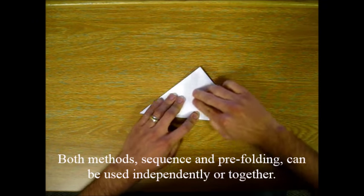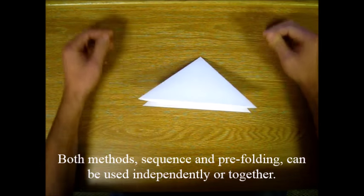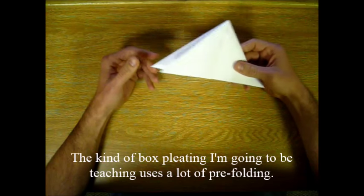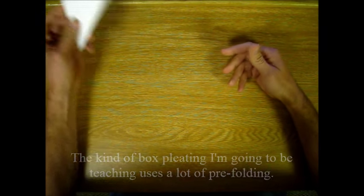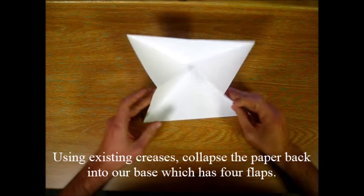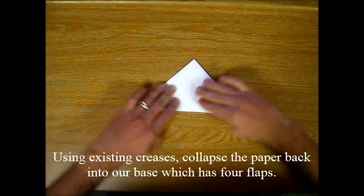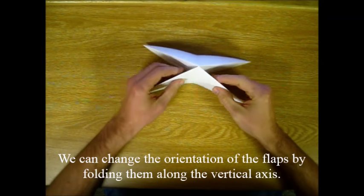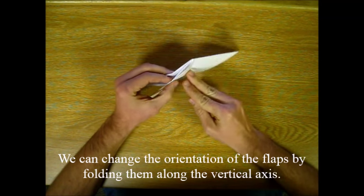Both methods, sequence and pre-folding, can be used independently or together. The kind of box pleating I'm going to be teaching uses a lot of pre-folding. Using our existing creases collapse the paper back into our base which has four flaps. We can arrange the orientation of the flaps by folding them along the vertical axis.